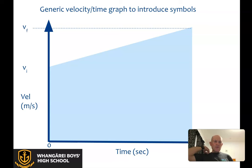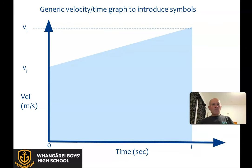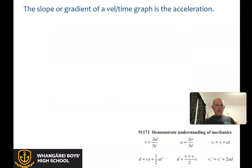If we have this graph here, a generic velocity-time graph, we've got velocity on the vertical axis: the initial velocity and then the higher one, the final velocity. On the horizontal, we go from start zero out to some time t. Down the bottom, I've put the four formulae plus the two earlier ones from NZQA.